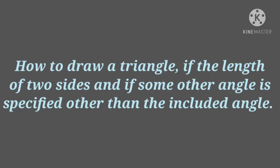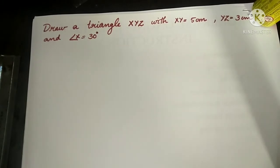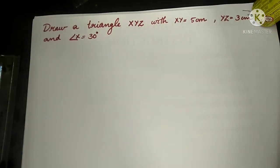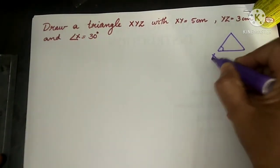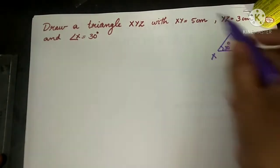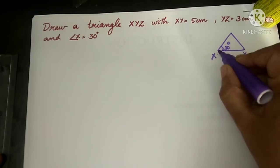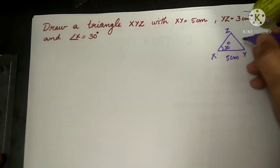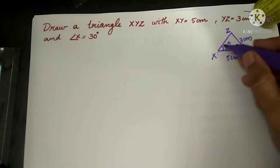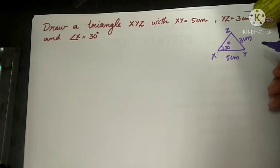Next topic: how to draw a triangle if the length of two sides and some angle other than the included angle is specified. Next question: draw a triangle XYZ with XY equal to 5 cm, YZ equal to 3 cm and angle X equal to 30 degrees. Let us draw the rough figure. Angle X is 30 degrees, XY is 5 cm, and from Y to Z it is 3 cm. So two sides and one angle are given here.